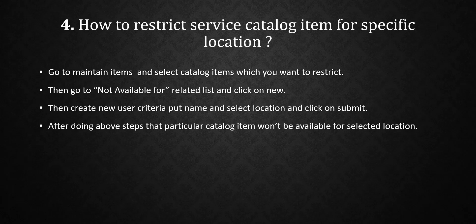Let's say there is one catalog item named Standard Laptop. Once we open that catalog item and scroll down, we'll get one related list called Not Available For. We have to go to Not Available For and click New. After clicking New, we create a new user criteria, give it a name, and in that user criteria we'll get a Location field. We select the location we want to restrict — say US or any other specific location — and click Submit. Once submitted, a record is created under the Not Available For related list, meaning this particular catalog item is not available for that particular location.